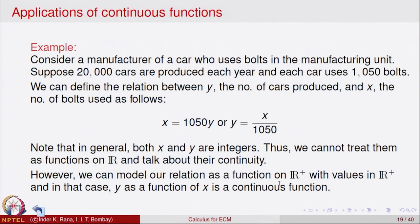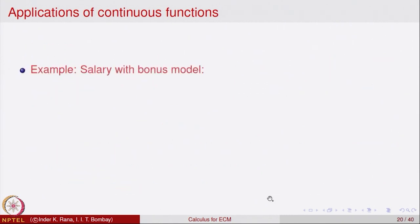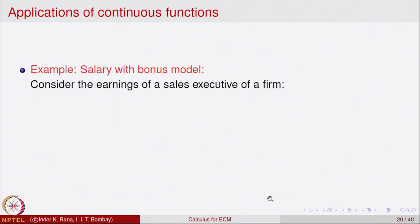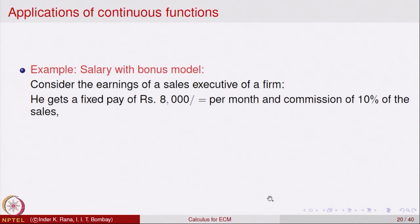Our next example is a model of salary with bonus, a model followed in many firms. Consider the earnings of a sales executive of a firm. He gets a fixed pay of 8000 rupees per month, plus a commission of 10 percent of the sales — whatever he is able to sell in a month, he gets 10 percent of that added to his earnings.